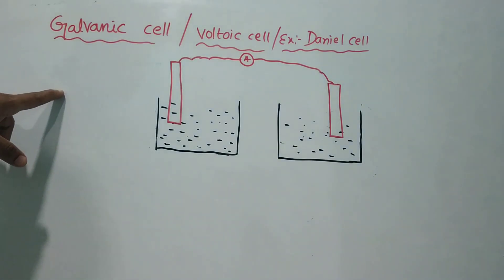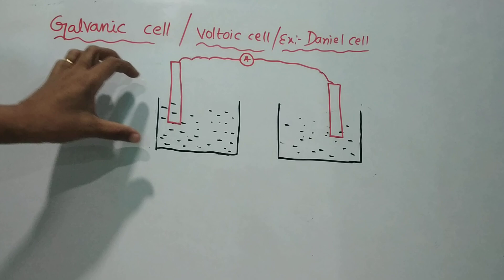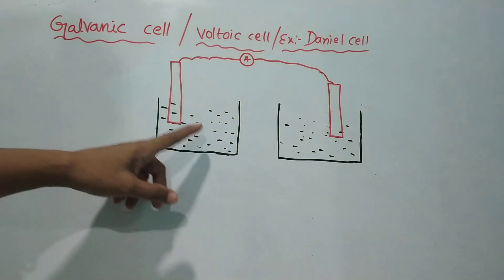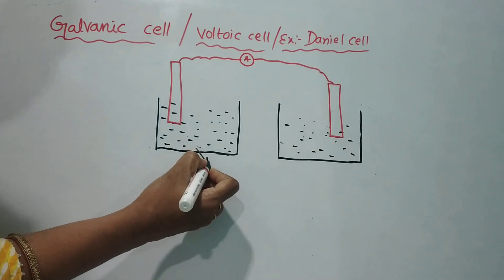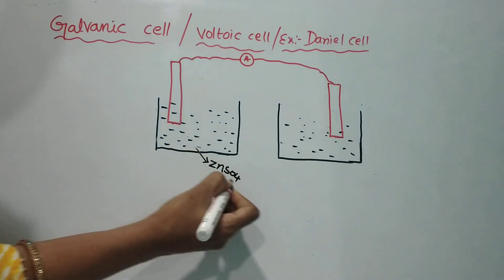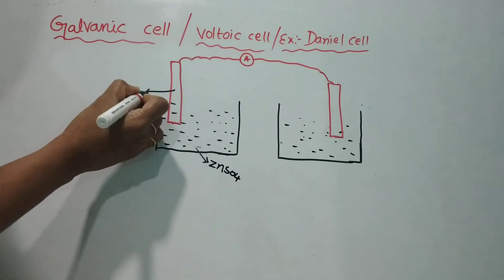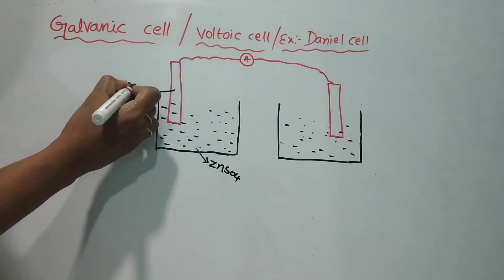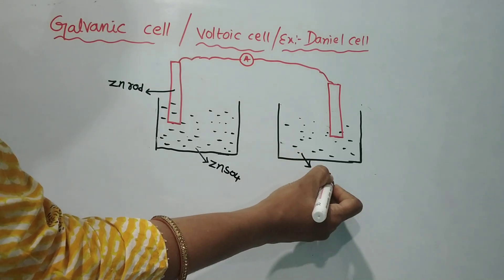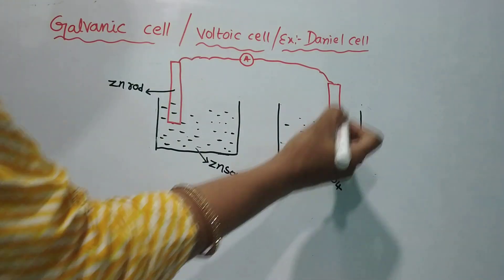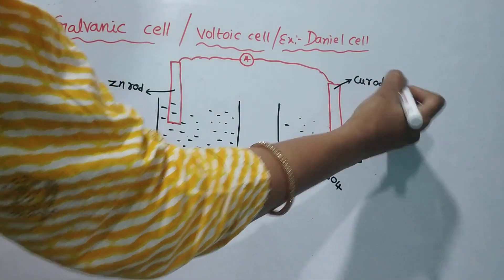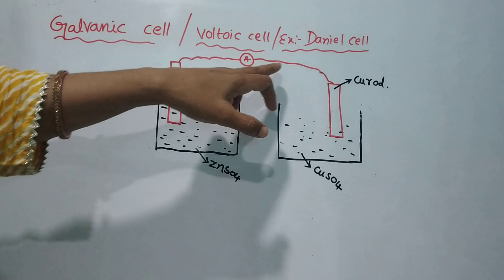We will look at the Daniel Cell. In this case, we fill one container with Zinc Sulphate solution and place a Zinc Rod here. In the other container, we use Copper Sulphate solution and place a Copper Rod here. There is an external circuit connecting the two.